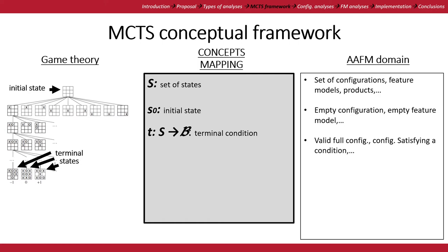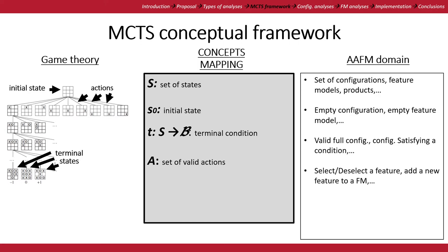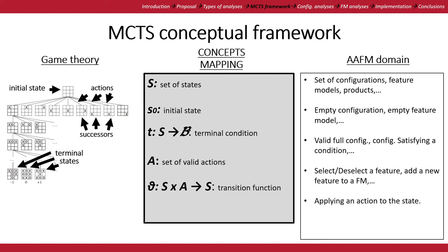We have a terminal condition that determines the set of terminal states, for example a valid configuration or one satisfying a given condition. To move from one state to another, we need to define the set of valid actions, corresponding to valid moves in games. In software product lines, an action can be to select or deselect a feature in a configuration, or add a new feature to a feature model, among other actions. The transition function applies an action to a given state, so applying all possible actions to the current state gives us the successors and access to all the search space.